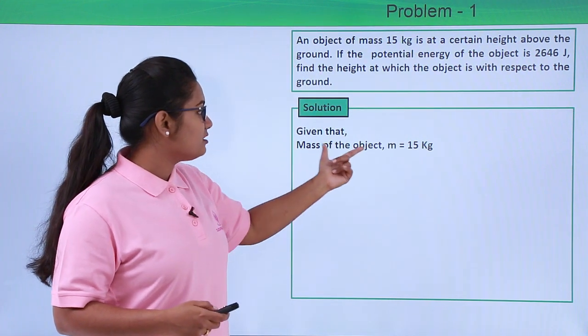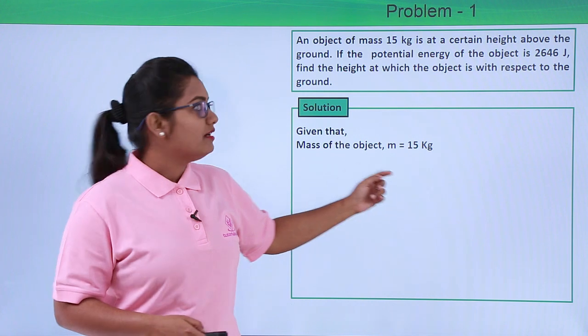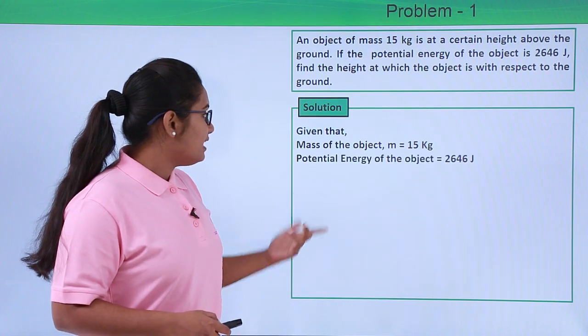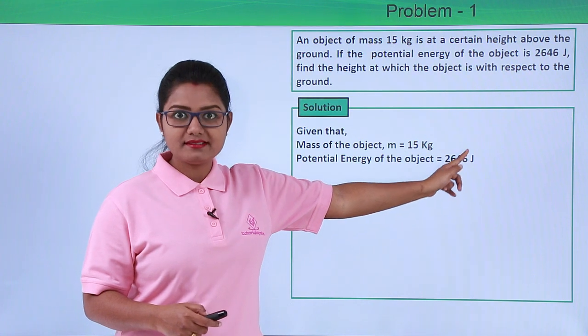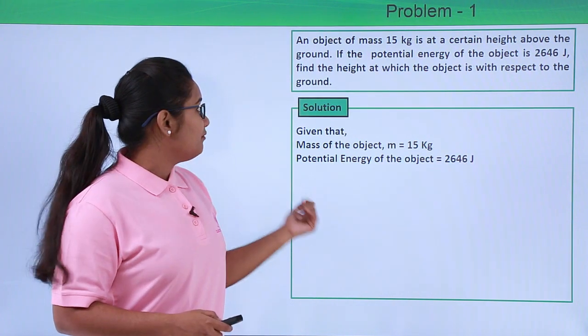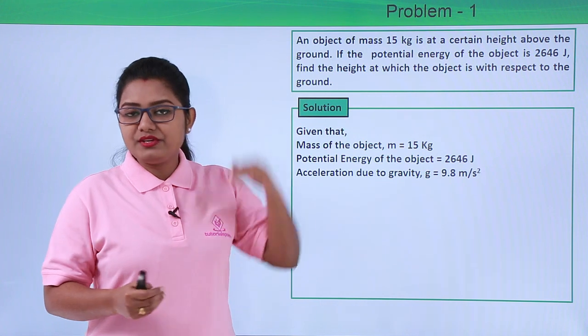In the question we have the mass of the object M to be 15 kg, and the potential energy of the object is also given to be 2646 joules. We need to find out what is the height at which the body is placed.